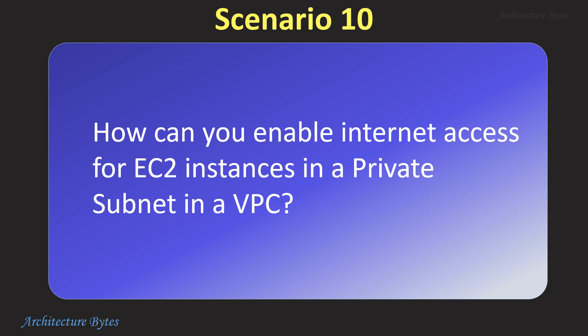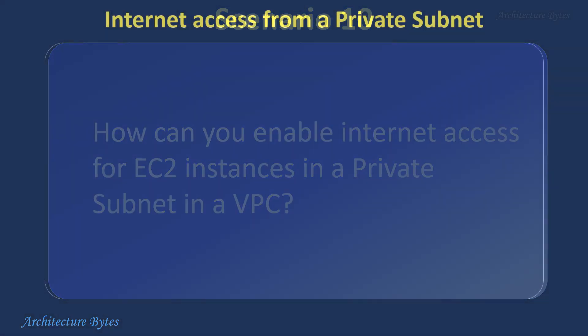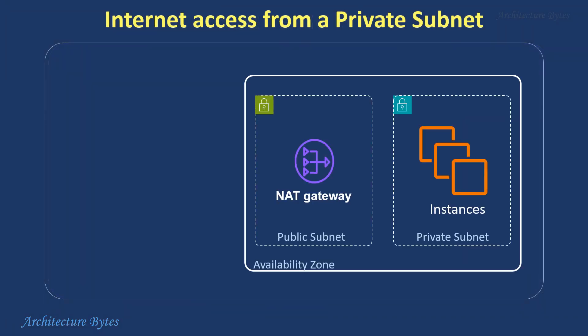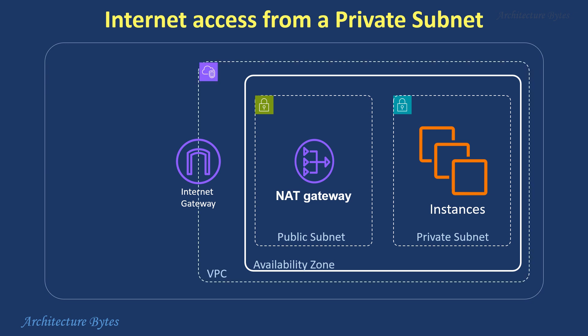How can you enable internet access for EC2 instances in a private subnet in a VPC? We can use a NAT gateway, which allows instances in a private subnet to connect out to the internet but prevents inbound connections from the internet reaching those instances. It acts like a translator, converting private IP addresses to a public IP for outbound traffic.